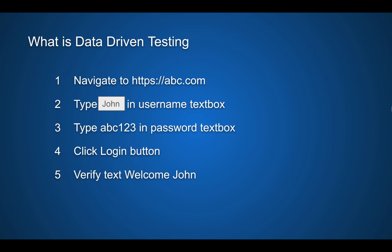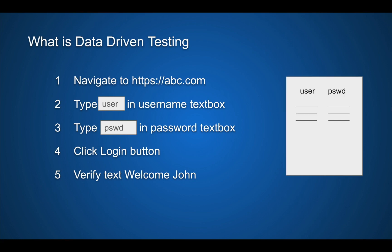For example, I want to use the username 'John' and the password 'abc123', so I will replace these two hard-coded values with variables. I'm using a variable 'user' for username and 'pswd' for the password. This process is called parameterization, where we replace the hard-coded values with variables. The second step will be to create a data source like a CSV file where we will add our data for these two variables. While we run our test case, the values for these variables will be referred from this data source.